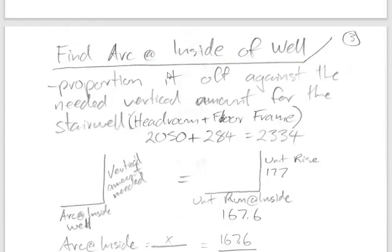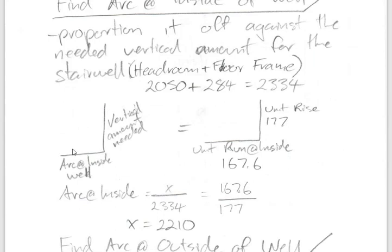Finding the arc at the inside of the well: the vertical amount needed is 2334mm. This has a relationship with the arc needed at the inside of the well in the same way that unit rise relates to unit run. At the inside stringer, unit run was 167.6mm. Cross-multiplying and dividing solves for x, giving an arc length for the inside well of 2210mm.